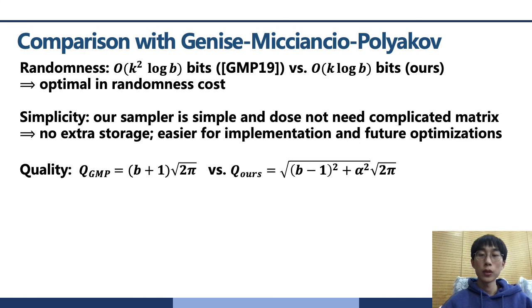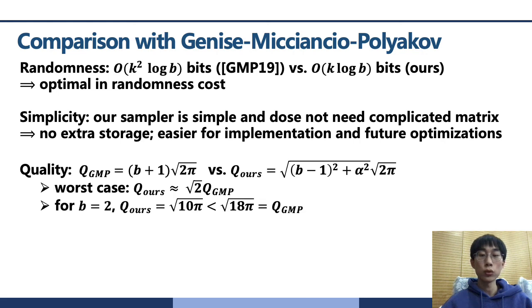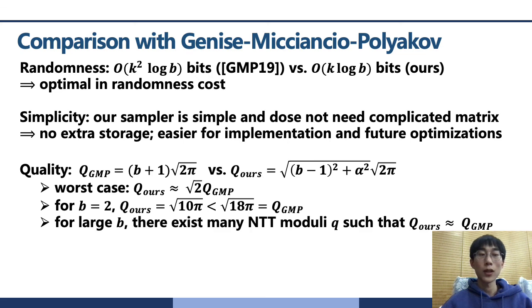Our algorithms achieved close even better quality for practical parameter. In the worst case, our parameter is about √2 larger than GMP parameter. But when the base is two, which is commonly used, our parameter is √(10π), which is smaller than GMP one. And for the large B, there exist many NTT moduli such that our parameter is similar to GMP one.